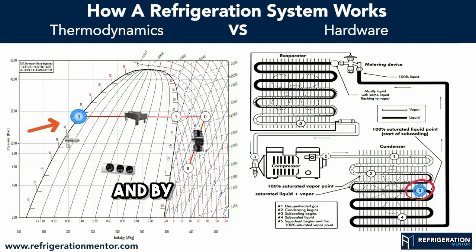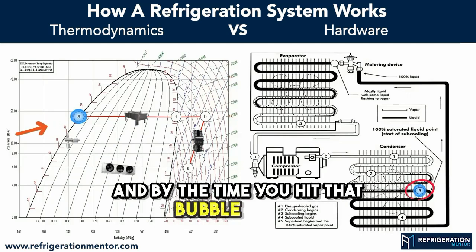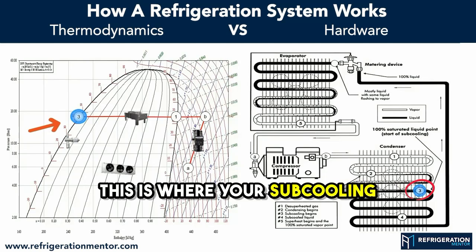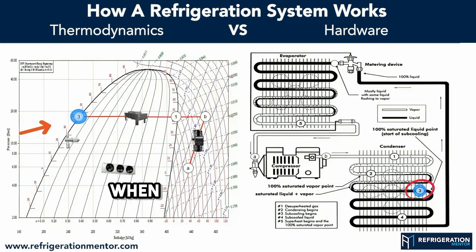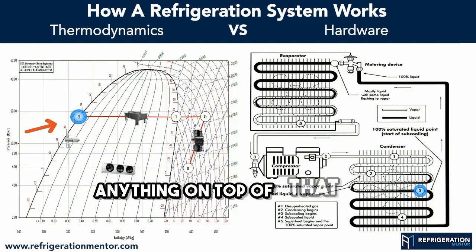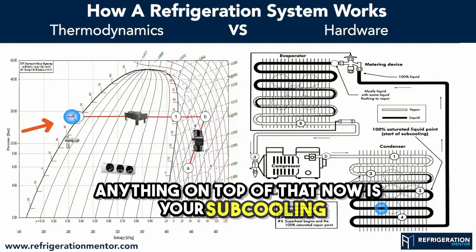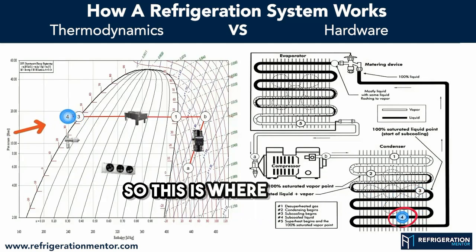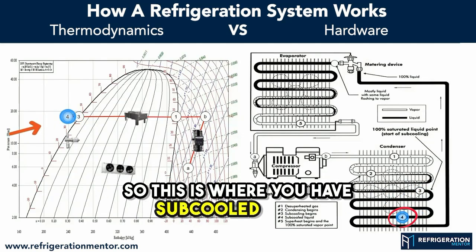And by the time you hit that bubble point, this is where your subcooling begins — when you have a full column of liquid. Anything on top of that now is your subcooling, so this is where you have subcooled liquid.